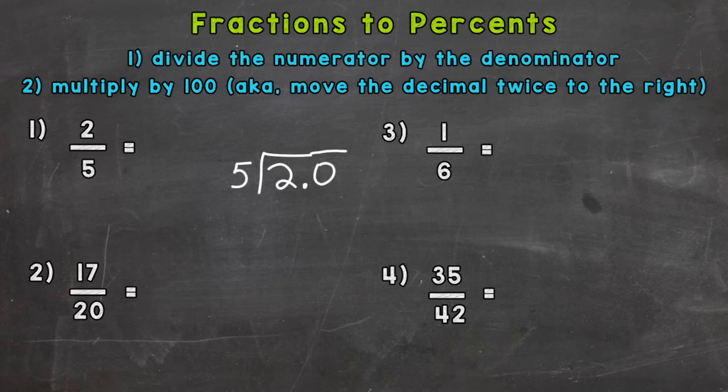Now bring the decimal straight up and we have 20 divided by 5. So how many whole groups of 5 out of 20? Well, 4. 4 times 5 is 20. Subtract, we get 0. So our answer for step 1, dividing the numerator by the denominator, is 0.4.